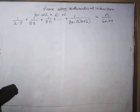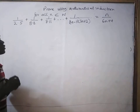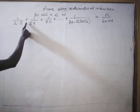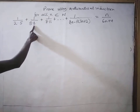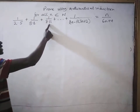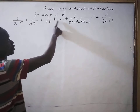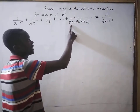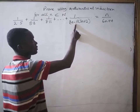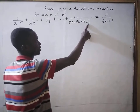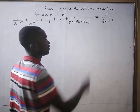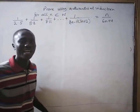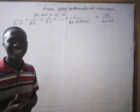Prove using mathematical induction for all n in the subset of natural numbers: 1 divided by (2 times 5) plus 1 divided by (5 times 8) plus 1 divided by (8 times 11) plus dot dot dot plus 1 divided by (3n minus 1)(3n plus 2) equals n divided by (6n plus 4). Now join me as we go through the proof step by step.